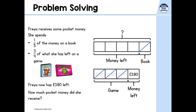If one-quarter is £3.80, then each quarter must also be worth £3.80. To work out how much she had left after buying the book, I do £3.80 multiplied by four, which is £15.20. Since £15.20 is in four equal parts, each part is worth £3.80, so the book also cost £3.80. To find out how much she received in total, I do £3.80 multiplied by five, which is £19. So Freya received £19.